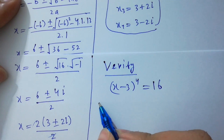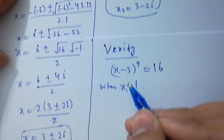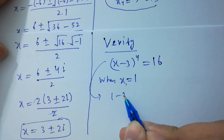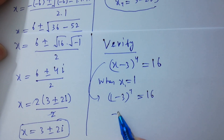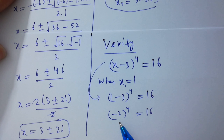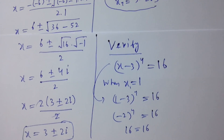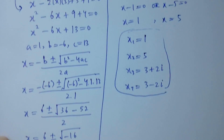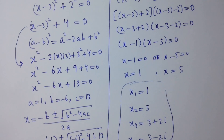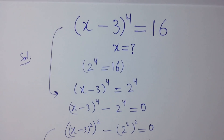Verifying x equals 1: (1 minus 3)^4 equals (minus 2)^4 equals 16, which satisfies the equation. Thanks for watching this video. Please subscribe to this channel to get notifications of new videos, and don't forget to share these videos with your classmates and friends so that they also benefit from it. Bye.